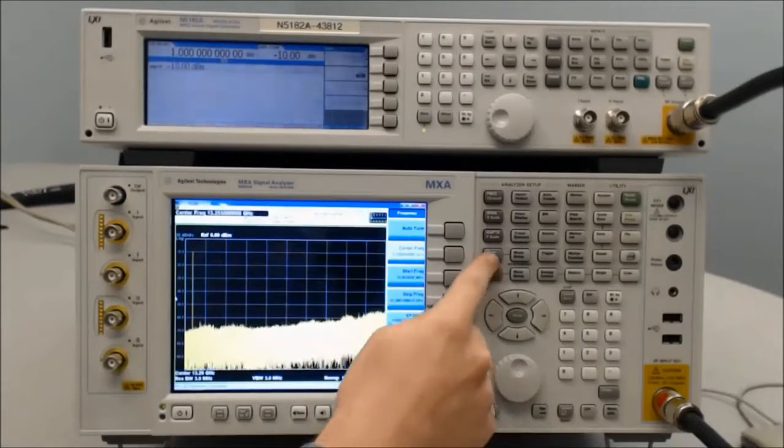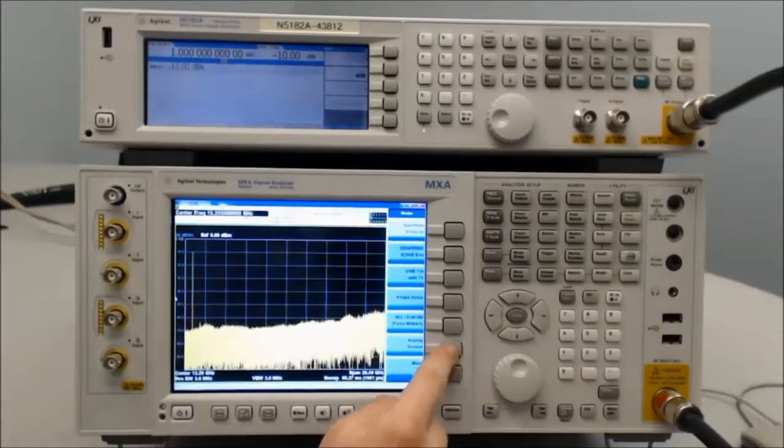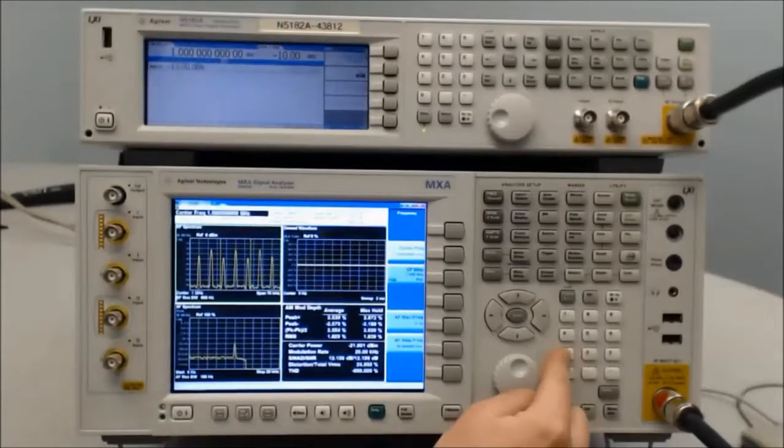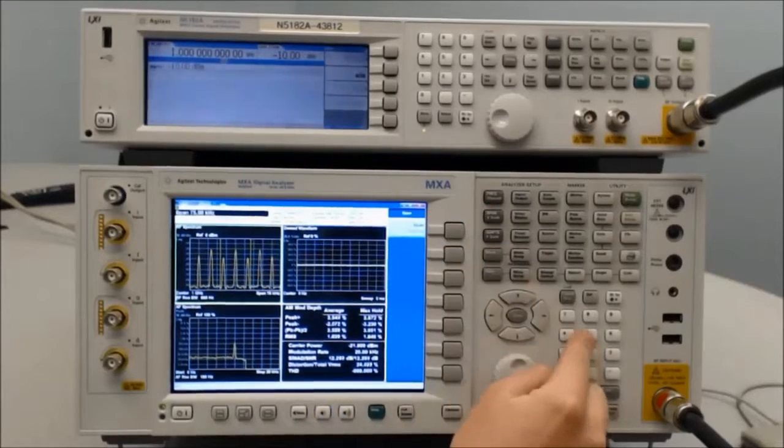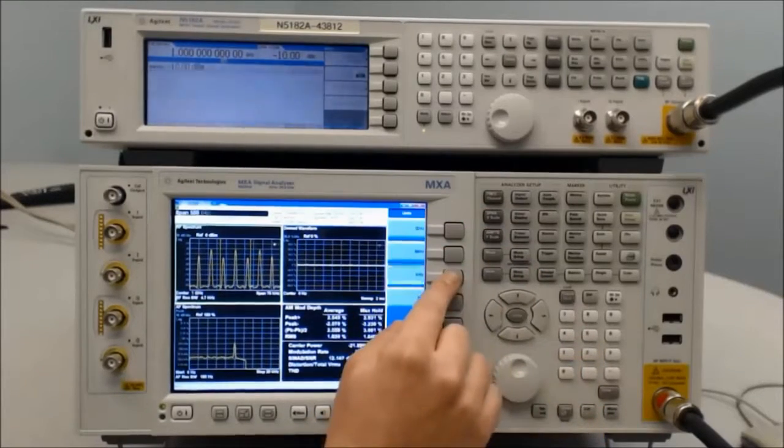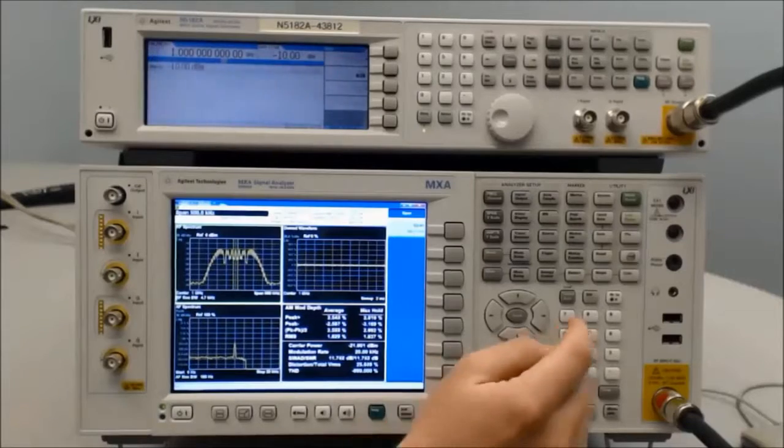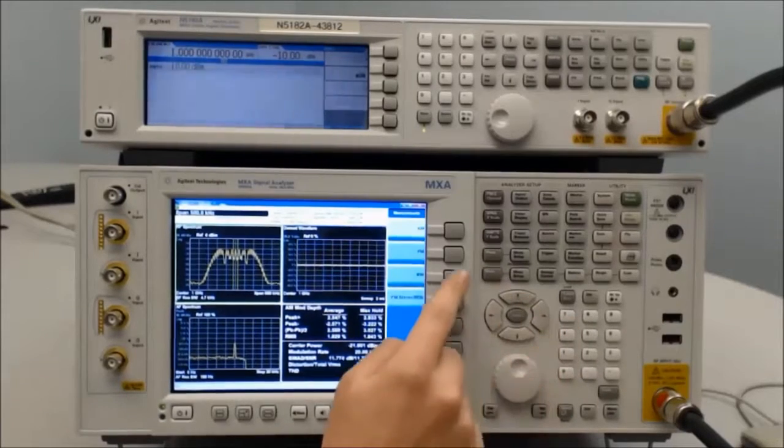On the MXA, we want to change the mode to analog demodulation. Set the center frequency to 100 kHz and change the span to 500 kHz. Go into the measurement setup and measure FM.